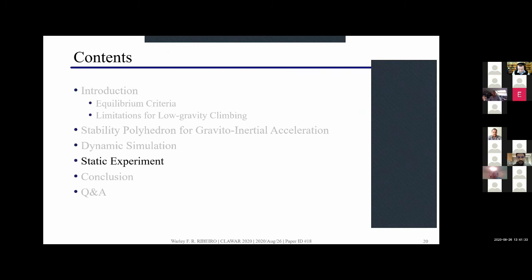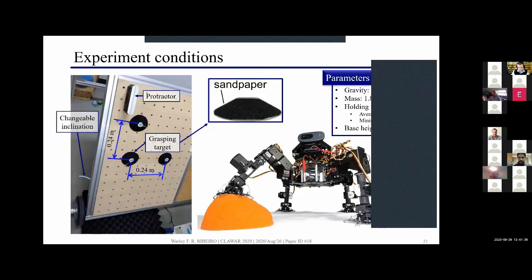Now I'll show some static experiments we conducted to validate the stability polyhedron. The experiment was conducted in this wooden plate with changeable inclination and as grasping targets we use conic shapes covered with sandpaper to emulate the rocks roughness. For the robot we use the prototype that I showed before. For the holding forces in reality they are very variant, they change a lot based on how well the robot is grasping, so we conducted some experiments before to check this holding forces. We use here the minimum value obtained and the average value.